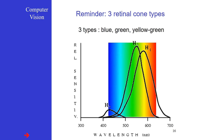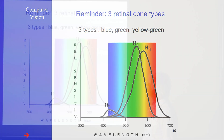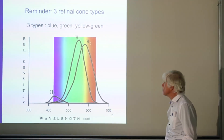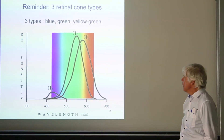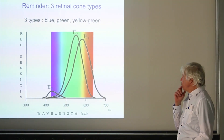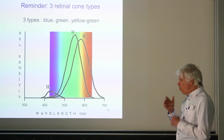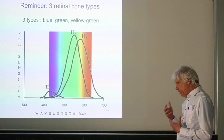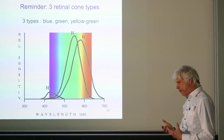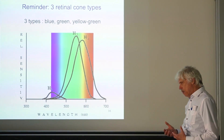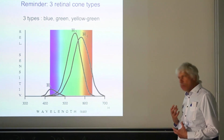Back to the three retinal cones — H1, H2, H3 — which we have seen before. Now we want to start to quantify this whole concept of light perception.